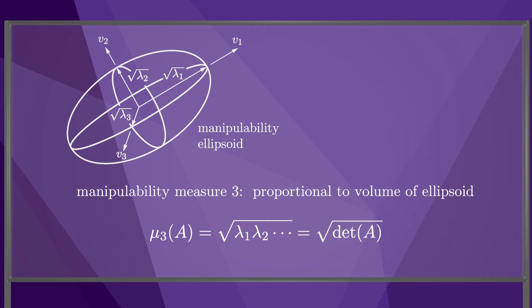A final measure is the square root of the product of the eigenvalues of A, which is proportional to the volume of the manipulability ellipsoid. If the manipulability ellipsoid volume becomes large, then the force ellipsoid volume becomes small, and vice versa.